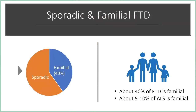We categorize FTD in two ways: the sporadic type and the familial type. Sporadic means FTD occurs in a person without any family history of FTD or a related neurological condition — it just kind of happens out of the blue. Familial FTD means FTD occurring when there's already an established family history of at least one or more people with FTD or another neurodegenerative disease. About 40% of FTD falls into the familial category, and about 60% occurs sporadically.